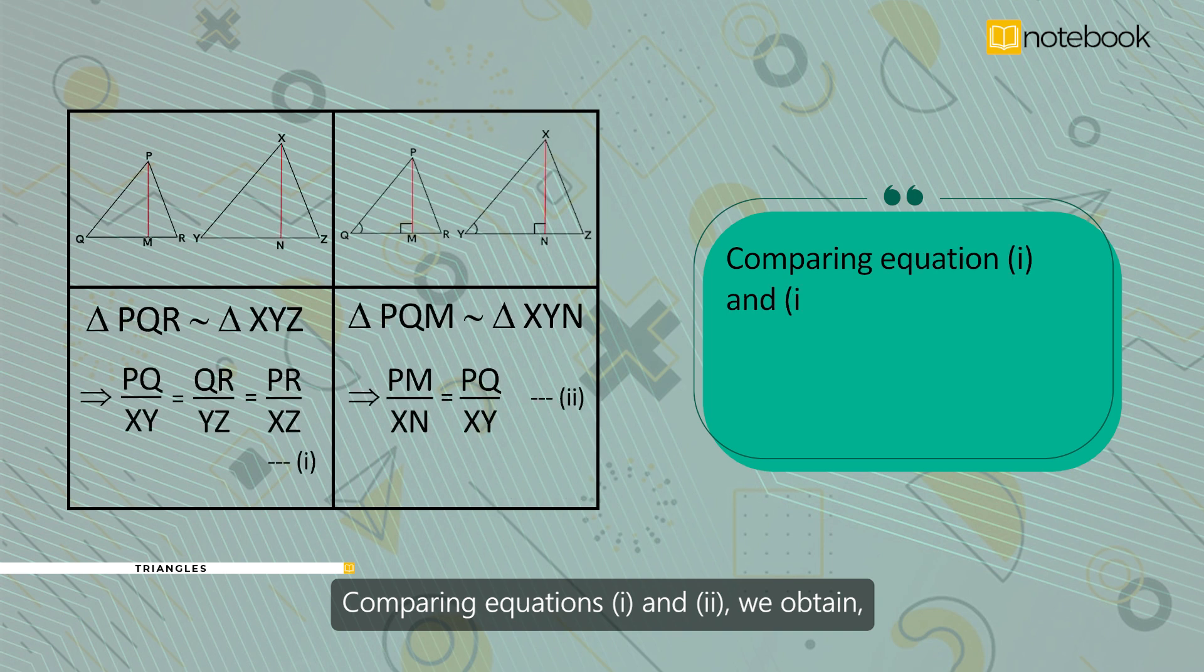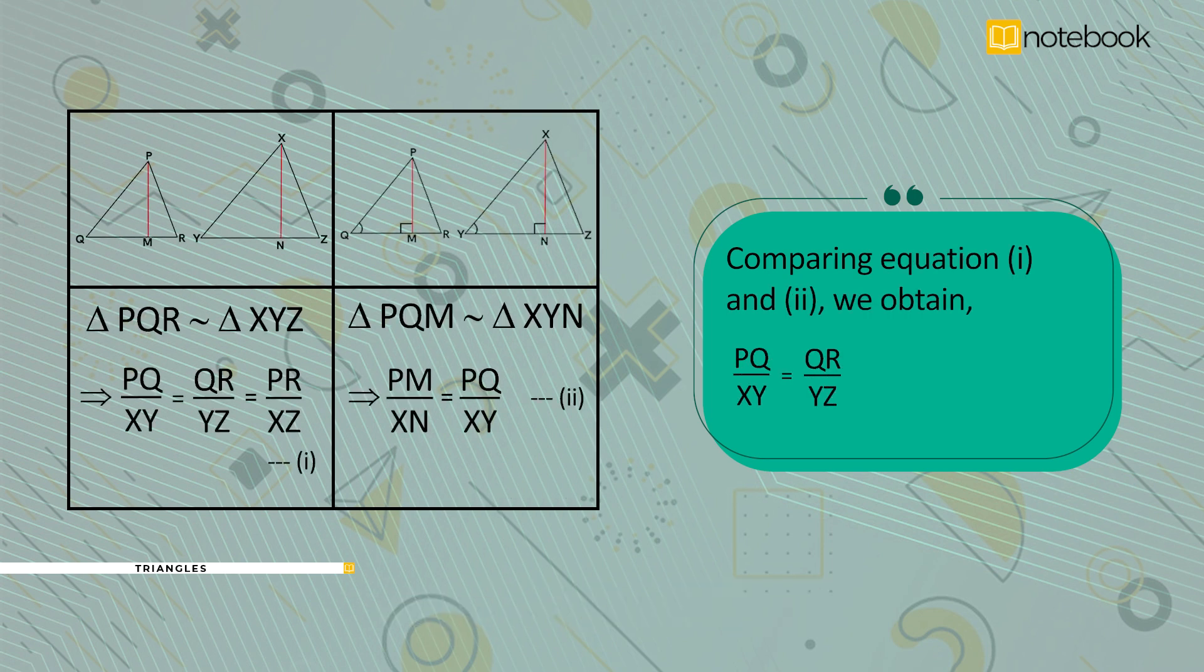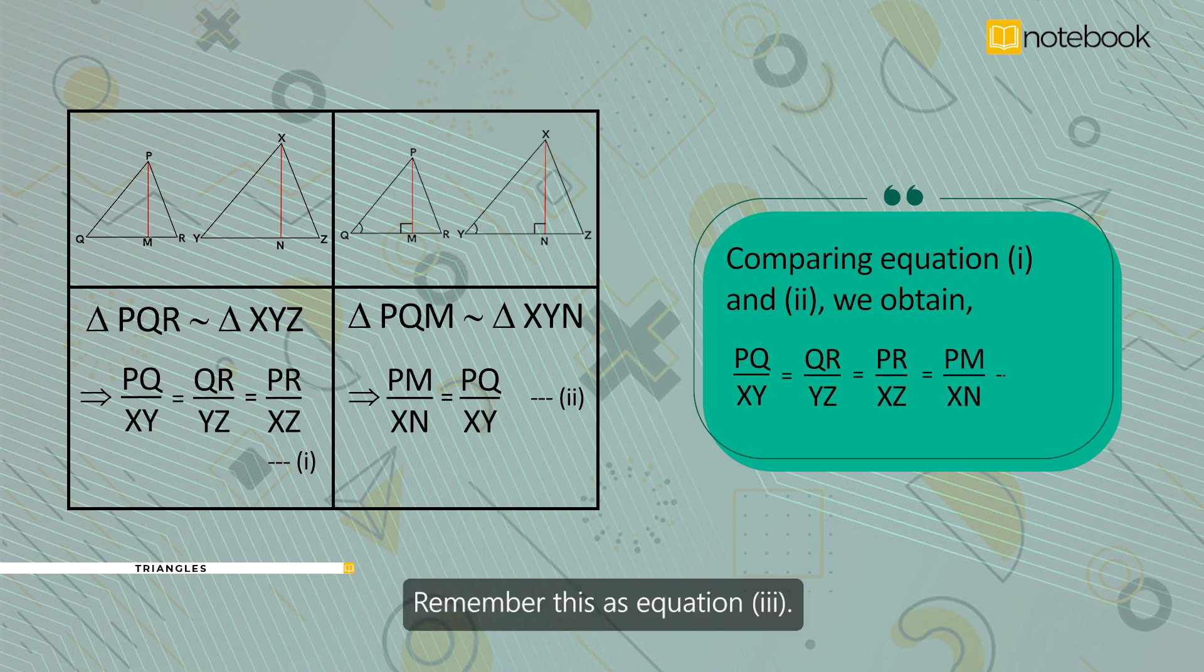Comparing equations 1 and 2, we obtain PQ by XY is equal to QR by YZ is equal to PR by XZ is equal to PM by XN. Remember this as equation 3.